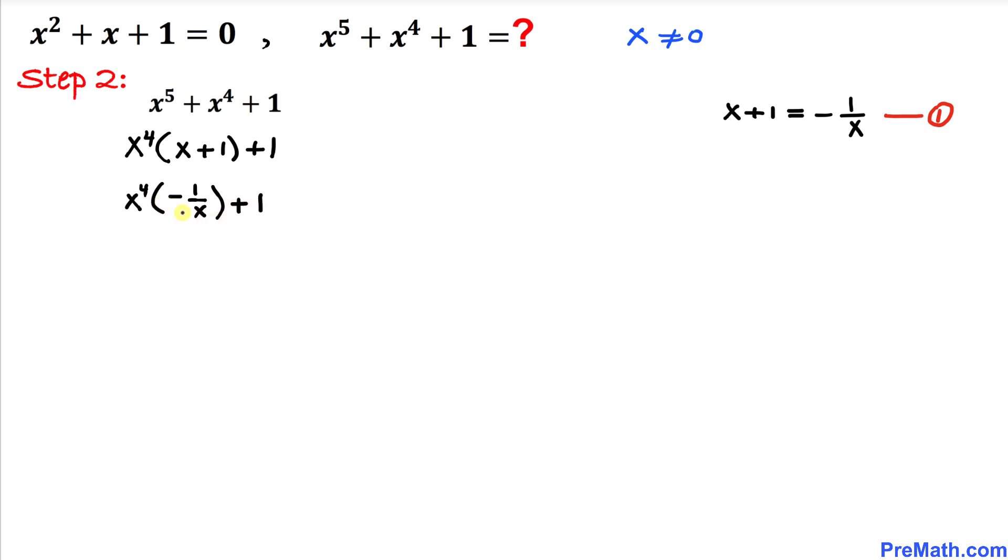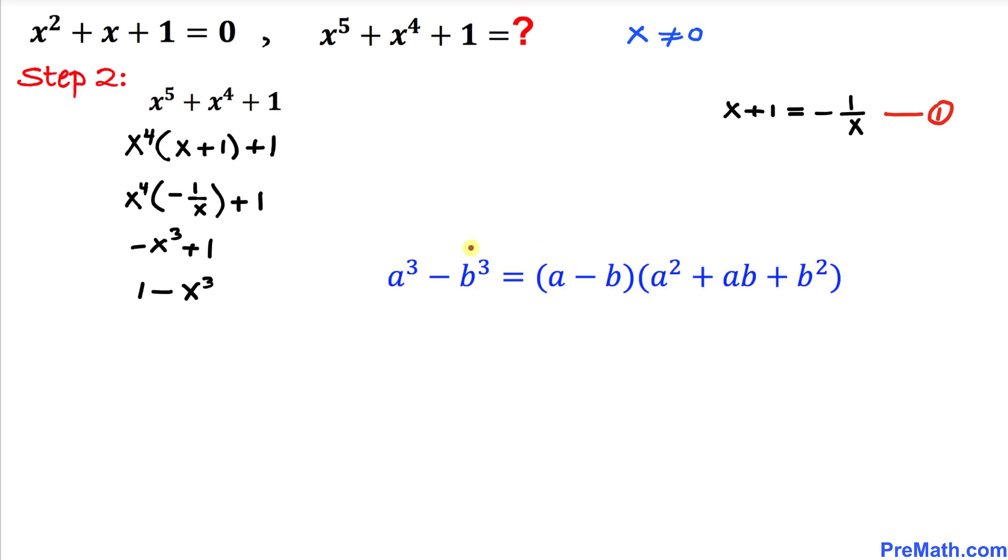Let's simplify this. x⁴ divided by x gives us -x³ + 1. Or if we switch it around, we can write this as 1 - x³.